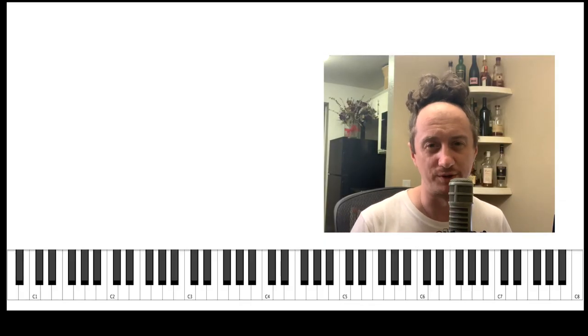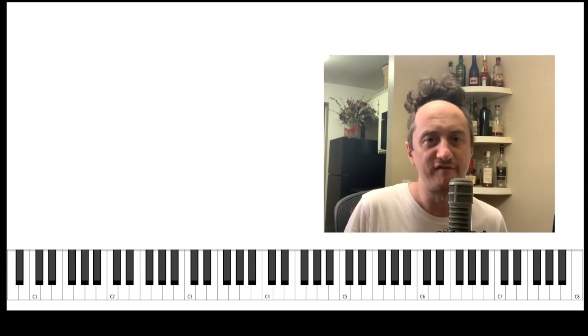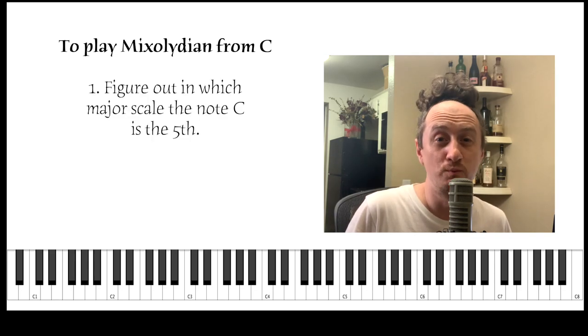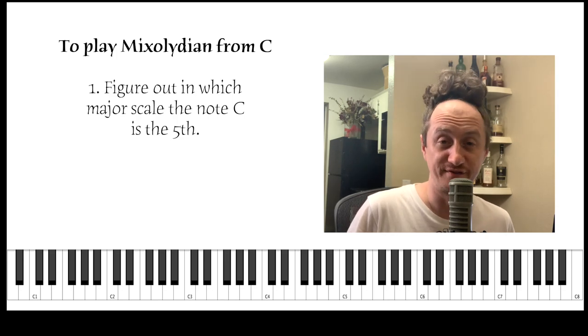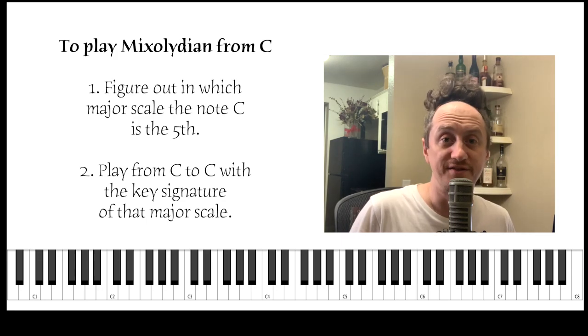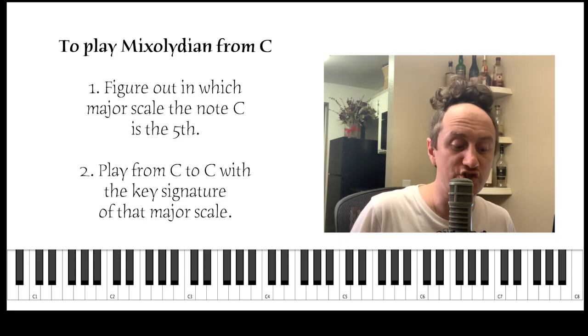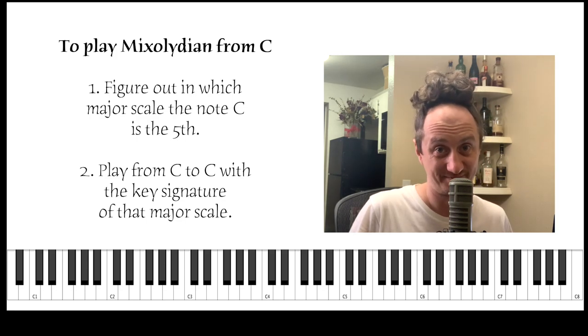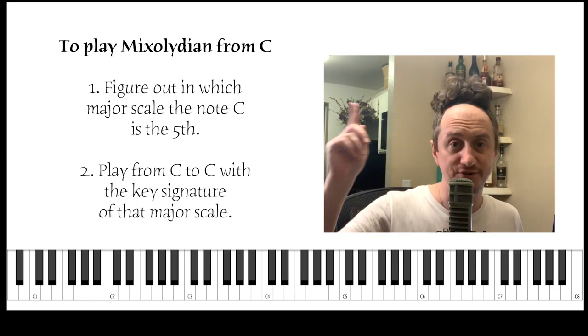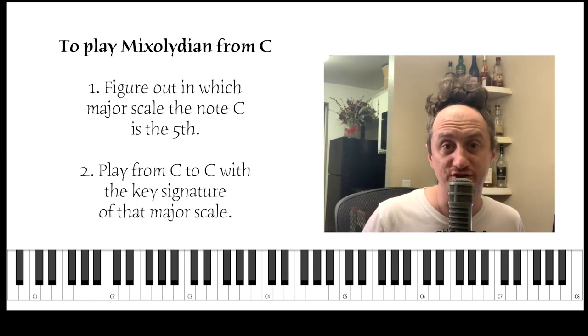So if Mixolydian is the fifth mode, if we want to play Mixolydian from C to C, we have to figure out in which major scale the note C is the fifth, and then play a scale from C to C using the key signature of that major scale. Again, if we want to play Mixolydian, which is the fifth mode from C to C, we have to find a major scale in which the note C is the fifth, and then play from C to C using the key signature of that major scale.